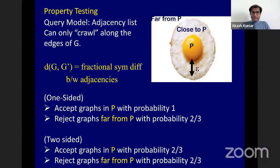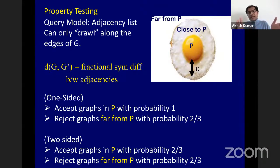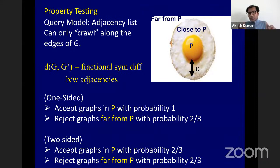A question about the normalization: the distance between graphs G and G' is the symmetric difference of their edge sets divided by n times the degree bound d. This normalization matters since the total number of edges is not n squared for bounded-degree graphs.